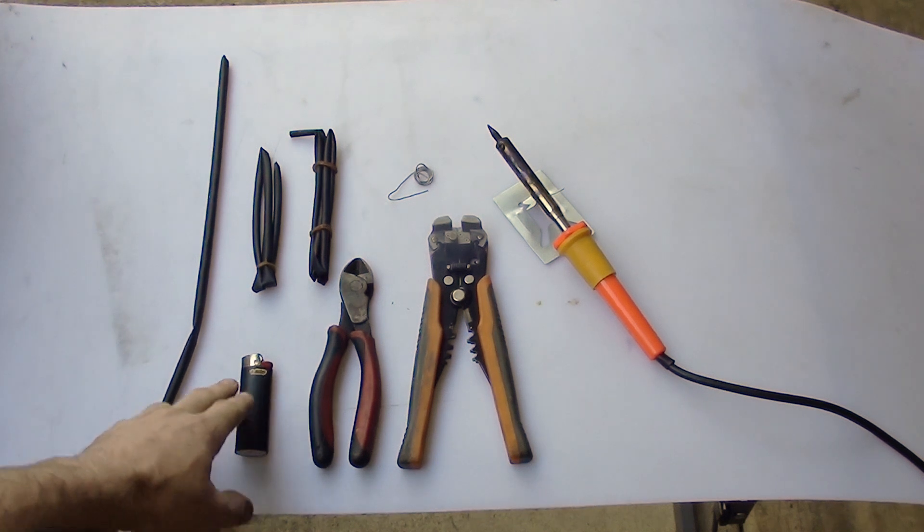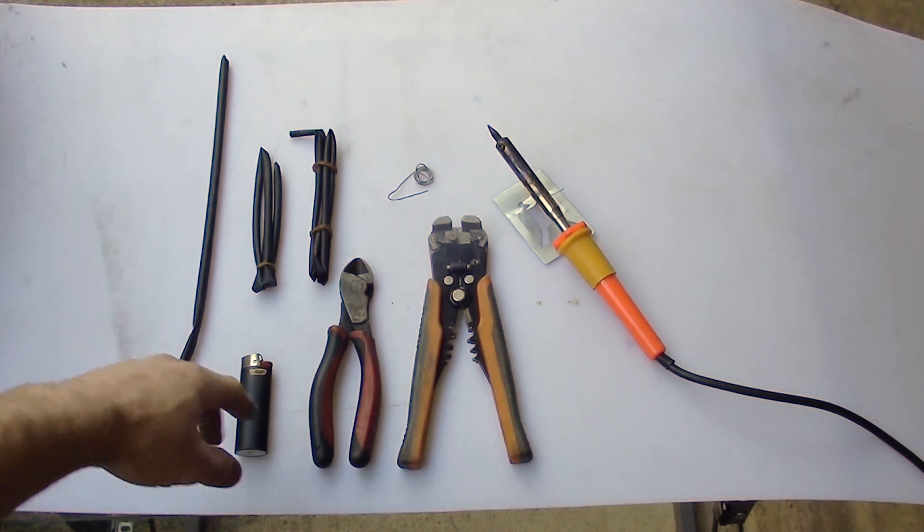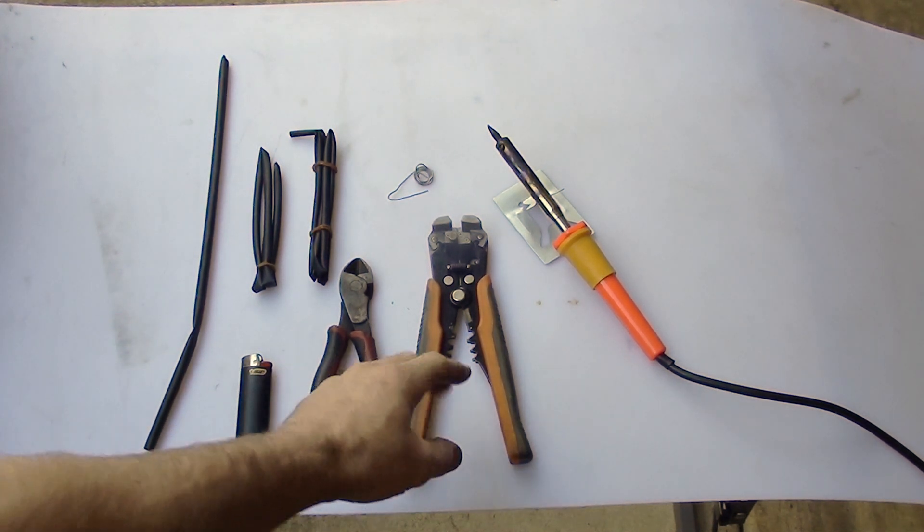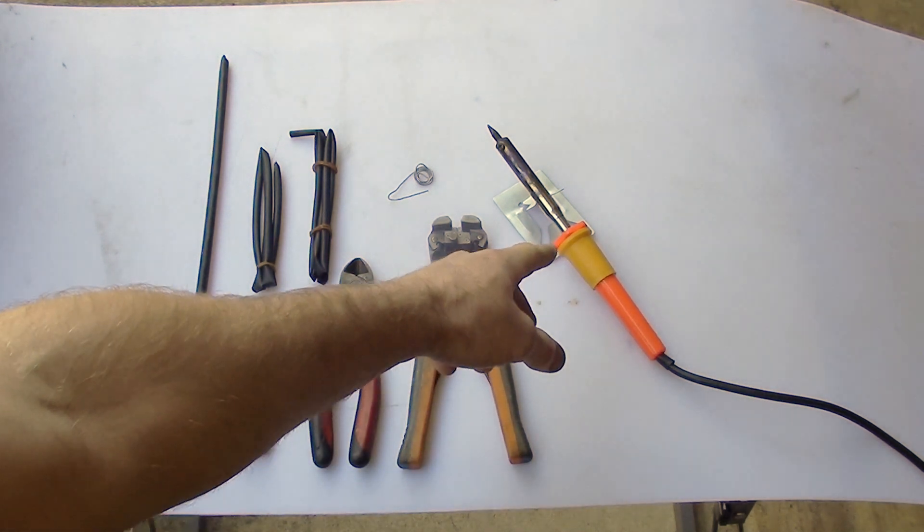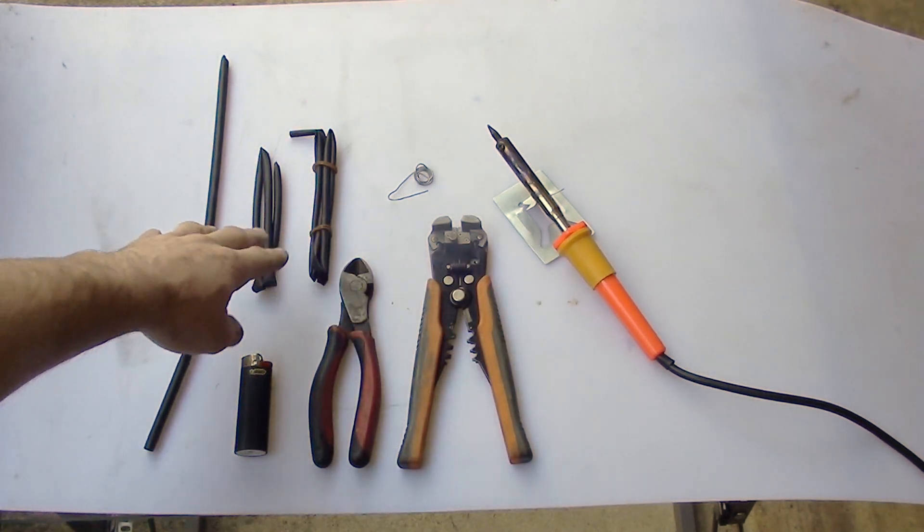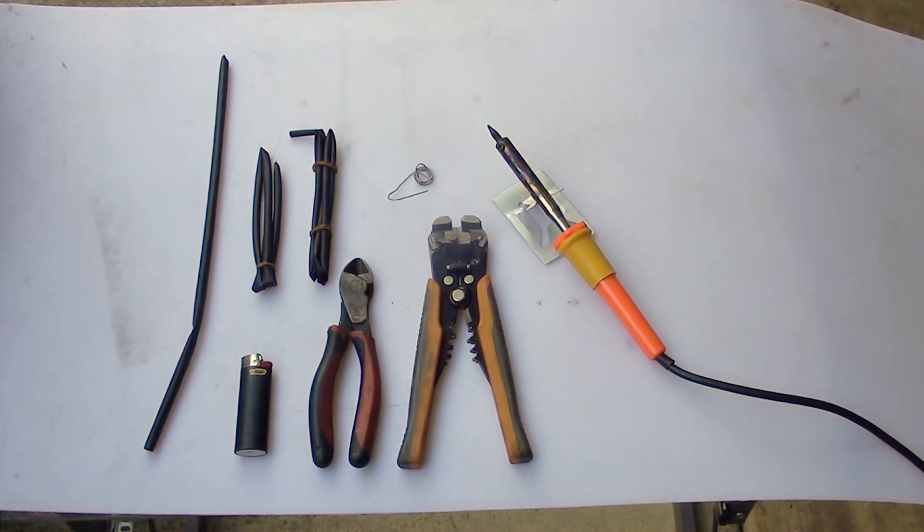So here are just a couple of tools that we're going to need. Just a lighter to heat the heat shrink, some wire cutters, some wire strippers, a soldering iron, some solder and a couple of different sizes of heat shrink depending on what wire you're going to solder together.